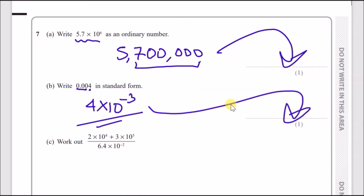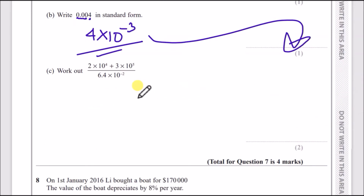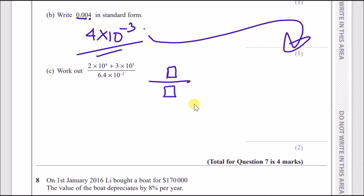For the last part of question 7, this is good because you just copy it straight into your calculator. Make sure you use the fraction button on your Casio calculator. I personally recommend the Casio fx-83 or fx-85 — just a standard Casio will do.